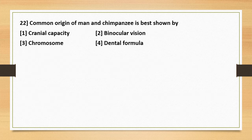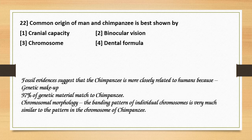Question number 22. Common origin of man and chimpanzee is best shown by: Options: 1. Cranial capacity. 2. Binocular vision. 3. Chromosome. 4. Dental formula. Evidence suggests chimpanzee is most closely related to humans because of genetic makeup — 98% of genetic material matches — and chromosomal morphology, where the banding pattern of individual chromosomes is much similar to that of chimpanzee chromosomes. So the correct answer is option 3, chromosomes.